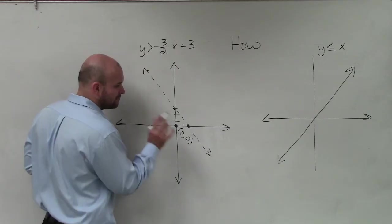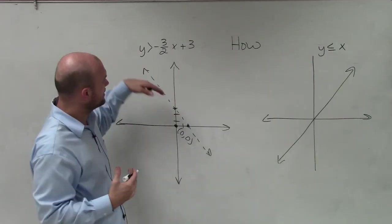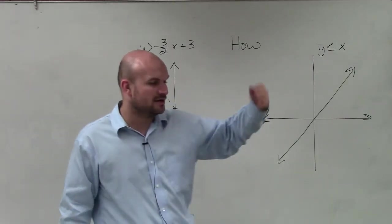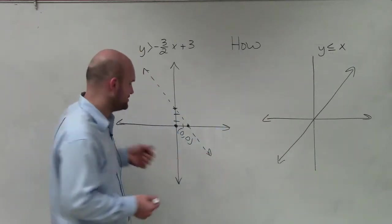The reason why (0,0) is so helpful is because the operations are going to be very simple. Any time you're adding to 0 or multiplying by 0, it's a pretty easy operation.